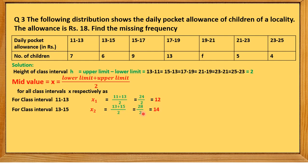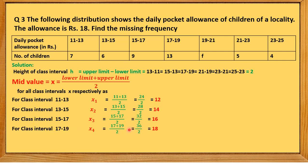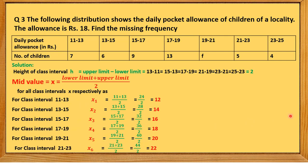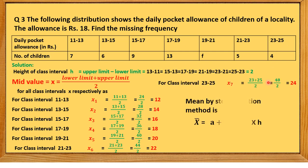Continuing the class marks: for 15–17, x₃ = (15+17)/2 = 16; for 17–19, x₄ = (17+19)/2 = 18; for 19–21, x₅ = (19+21)/2 = 20; for 21–23, x₆ = (21+23)/2 = 22; and for 23–25, x₇ = (23+25)/2 = 24.